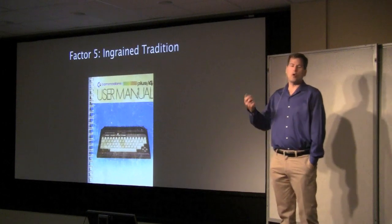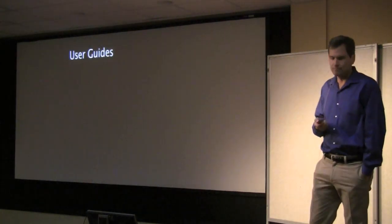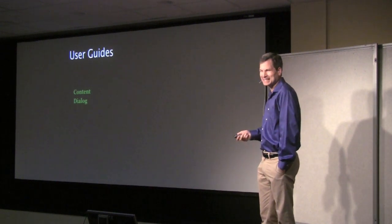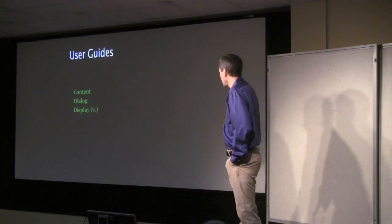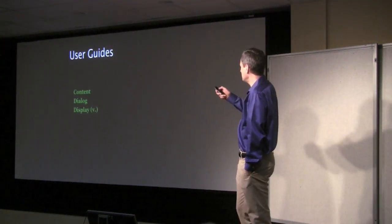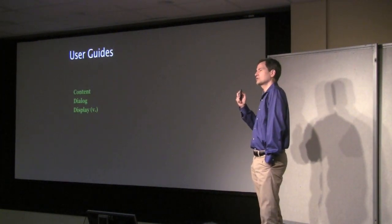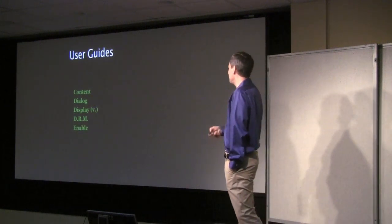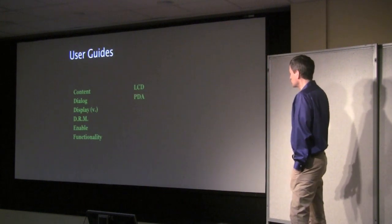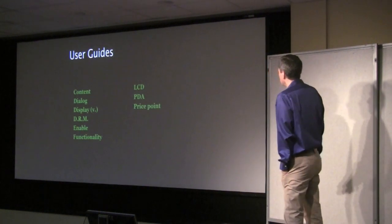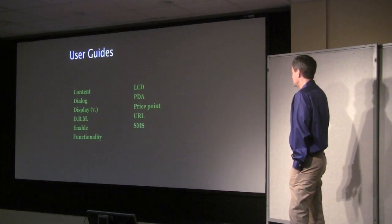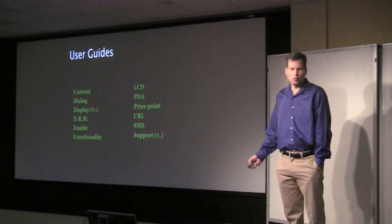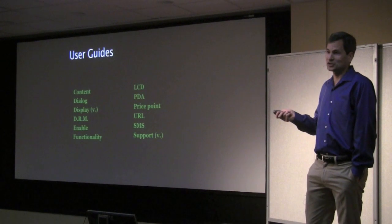There's a fifth factor at work, the way we've always done things syndrome. It drives me crazy the way the technology industry uses the language. They use these terms, contents, when they mean websites. Refresh your content. Who talks like that? They say dialog when they mean dialog box. They mean display when they mean a non-transitive verb. DRM when they mean copy protection. Enable when they mean turn on. Functionality when they mean feature. LCD when they mean screen. Price point when they mean price. URL when they mean web address. SMS when they mean text message. Support when they mean works with. Like, this screen supports VGA. No, it works with VGA. So nobody talks to themselves like that. And then the big one, of course, is user. There are only two industries that refer to their customer.